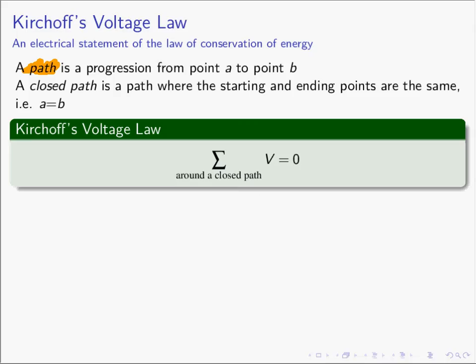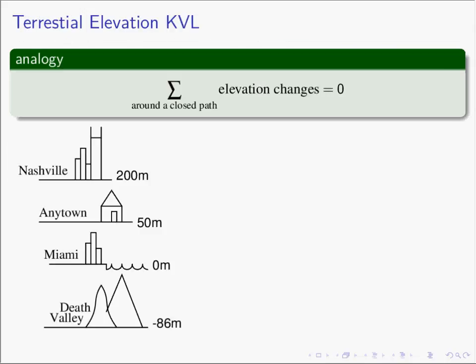Before we do an example, let's go back and look at our analogy — the terrestrial elevation version of KVL. If we were to write KVL in terms of terrestrial elevations, we would have that the sum of the elevation changes around a closed path equals zero. So let's do an example. We are going to start in Anytown, USA, and we are at a particular energy level. What is that energy level? It is 50 meters above sea level.